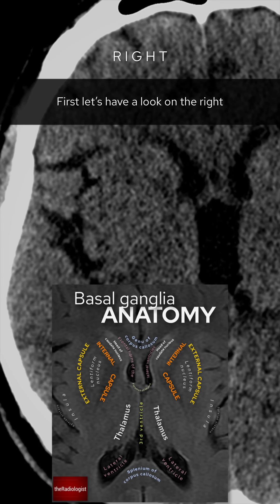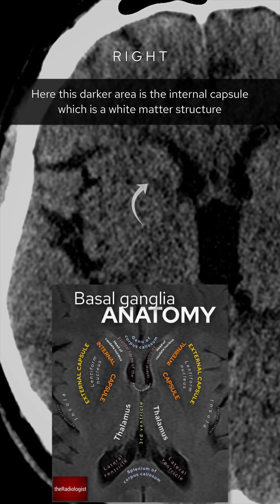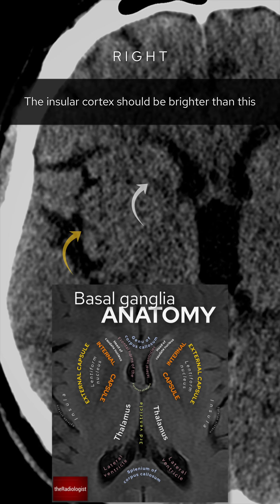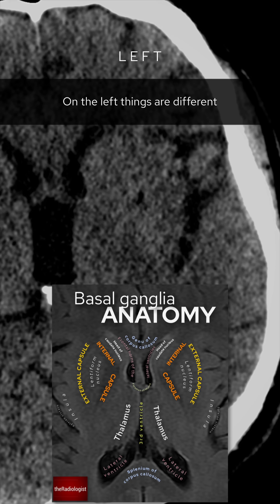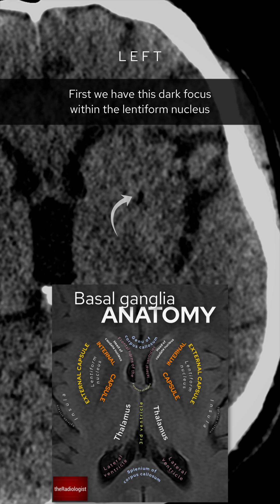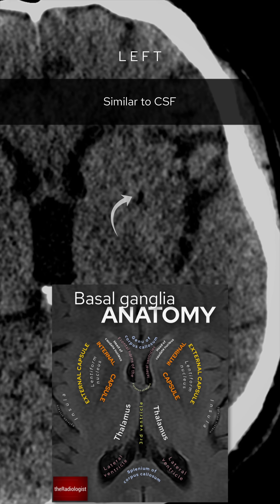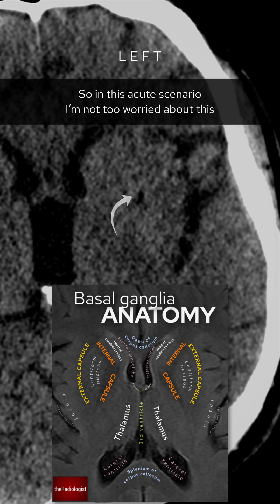First let's have a look on the right. This darker area is the internal capsule, which is a white matter structure. The insular cortex should be brighter than this, as it is over here on the right. On the left things are different — we have this dark focus within the lentiform nucleus, similar to CSF. This is a mature lacunar infarct.